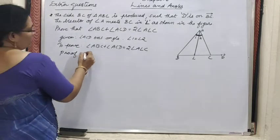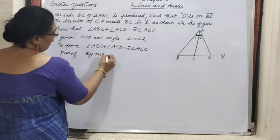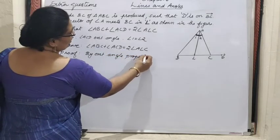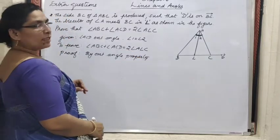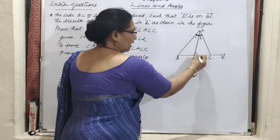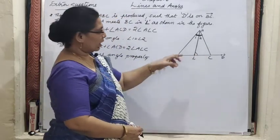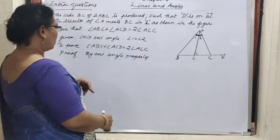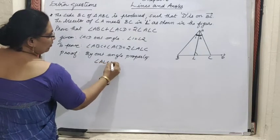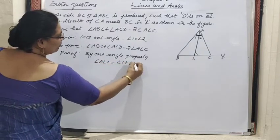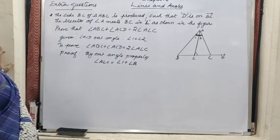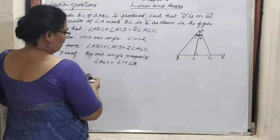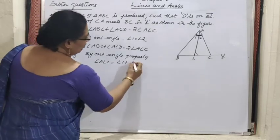By exterior angle property — here you can see that ALC is there. If you consider angle ALC, it is an exterior angle for triangle ABL. So angle ALC equals angle 1 plus angle B, which means angle ABL. I will write angle ABL here.